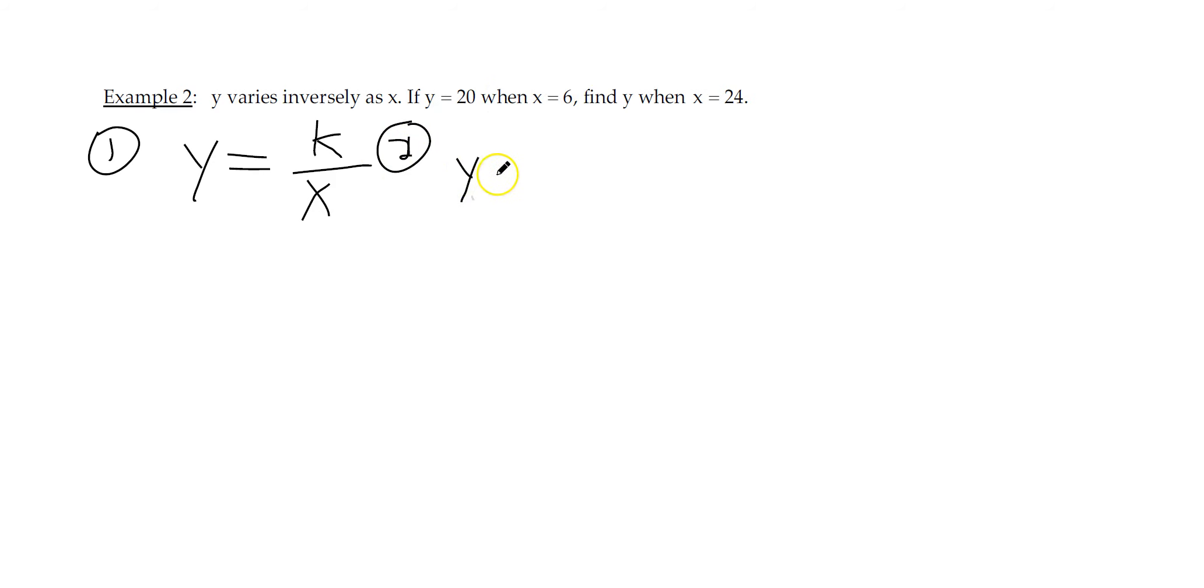Our second is to use the set of information. So that would be y. We know what y is. Specifically, 20 equals k over x, which is 6. And solve for k. 20 times 6, 120.